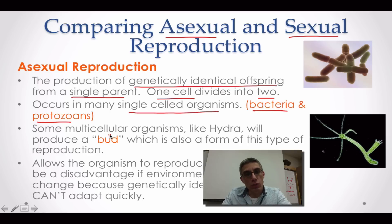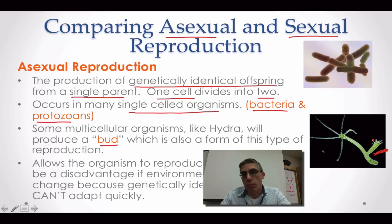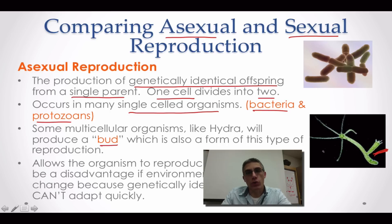There are some multicellular organisms like hydra that will also perform asexual reproduction. When we talk about this form of reproduction, we're mostly talking about single-cell creatures — one cell simply divides into two. But if it is a multicellular creature like the hydra, it's going to produce something called a bud. You can see the bud on this hydra — this is the offspring, and this is the parent or adult.